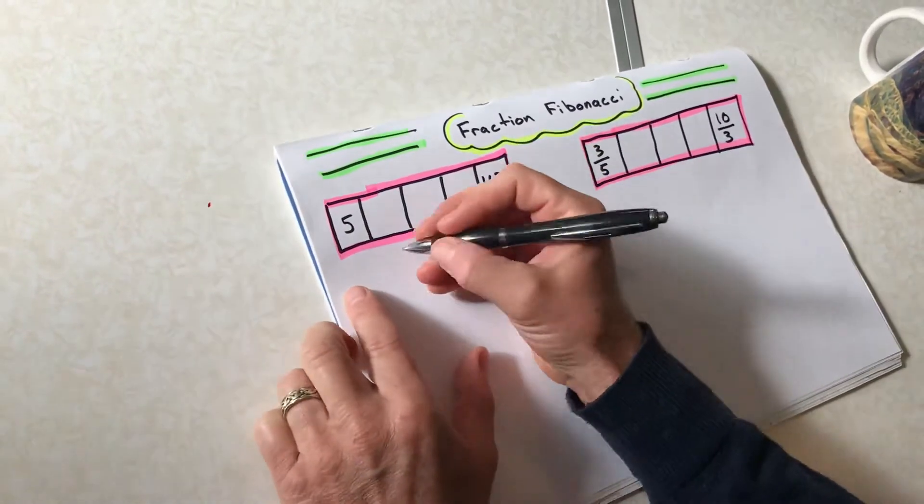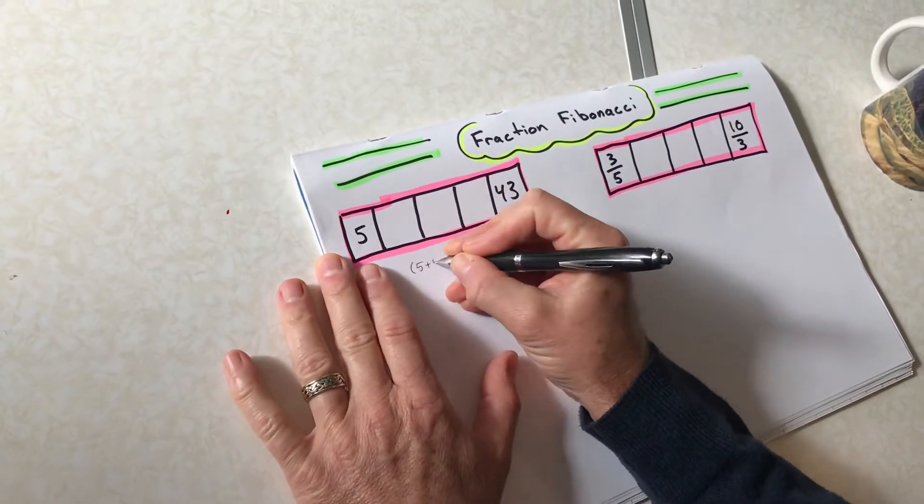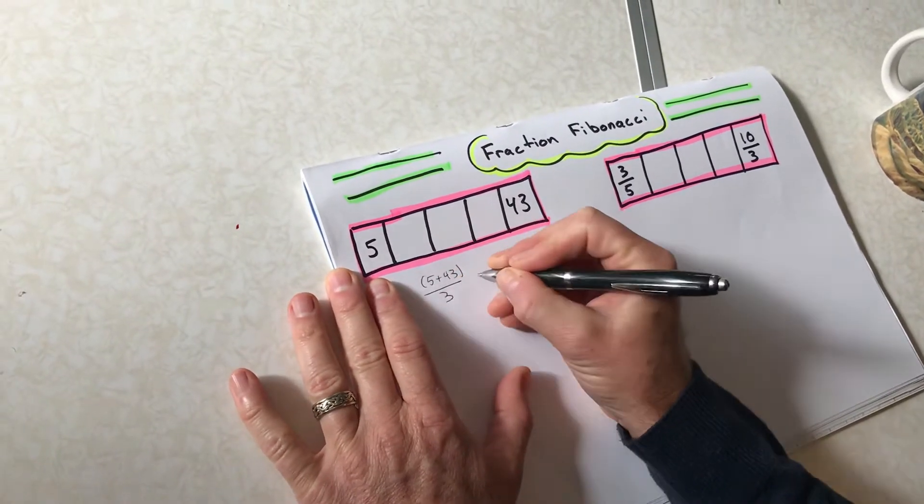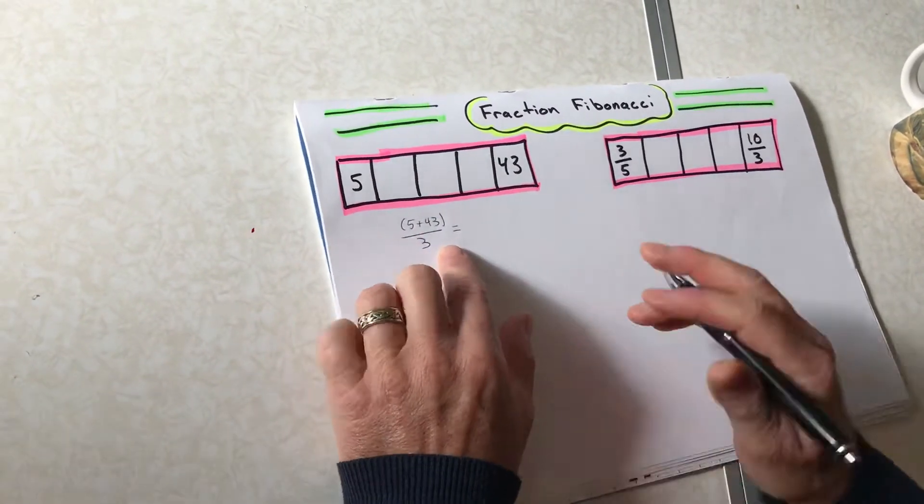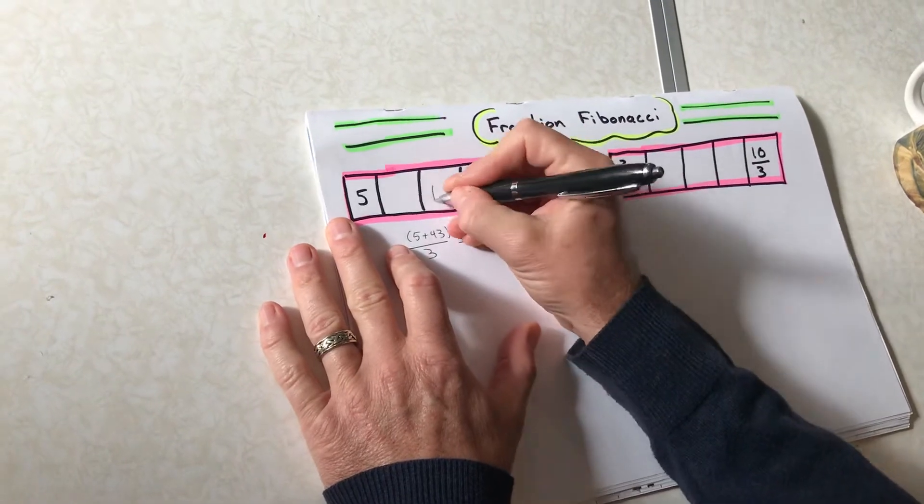So what is that? 5 plus 43 divided by three. 48 divided by three gives me 16. So that middle number is 16.